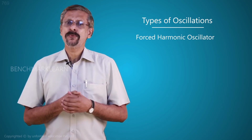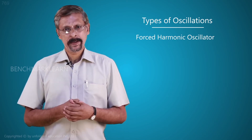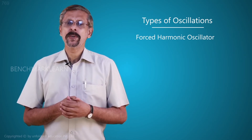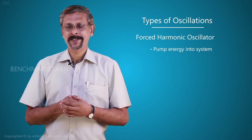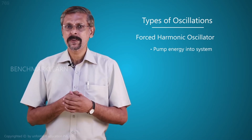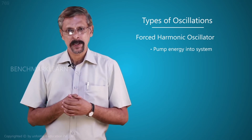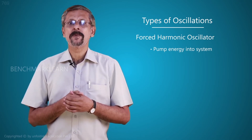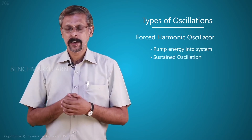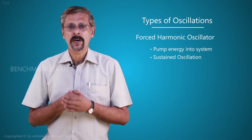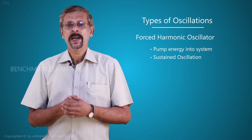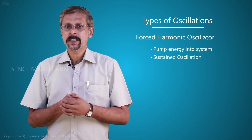In a damped oscillator, the drain of energy causes oscillations to come down drastically. What we are going to do is pump energy into the system so that there is no loss of energy — or rather, we compensate for the loss by supplying energy from outside. The oscillations will never come down; there will be sustained oscillations. Such a system is known as a forced harmonic oscillator, where we force it to vibrate with the same energy and amplitude.